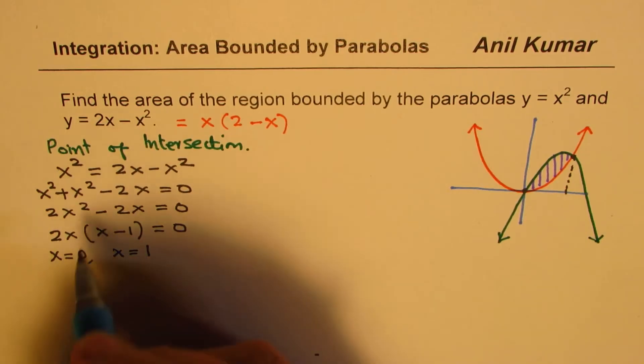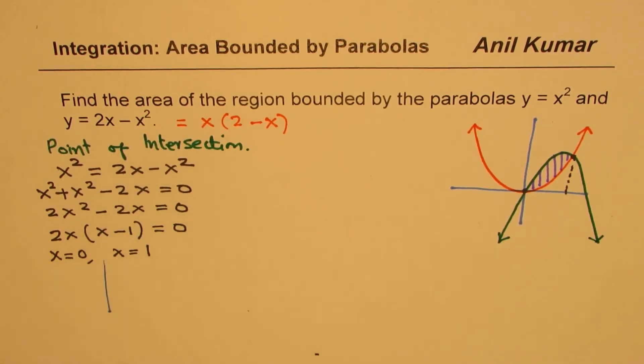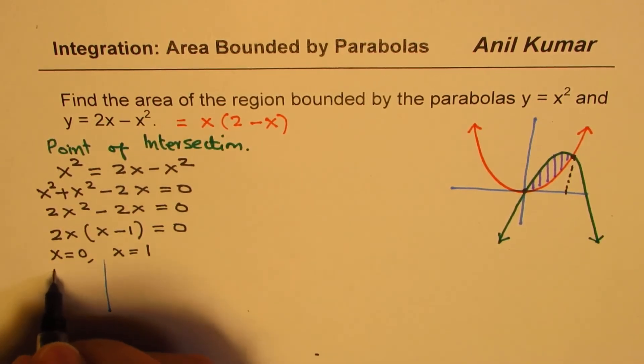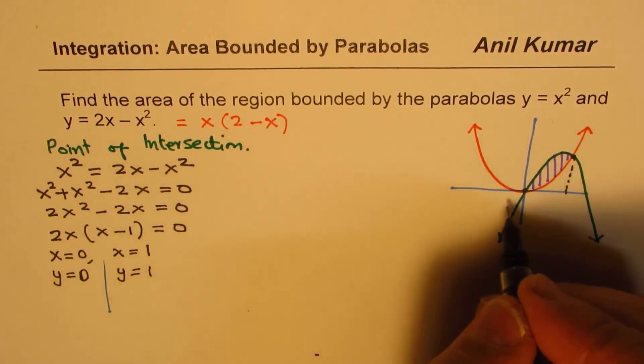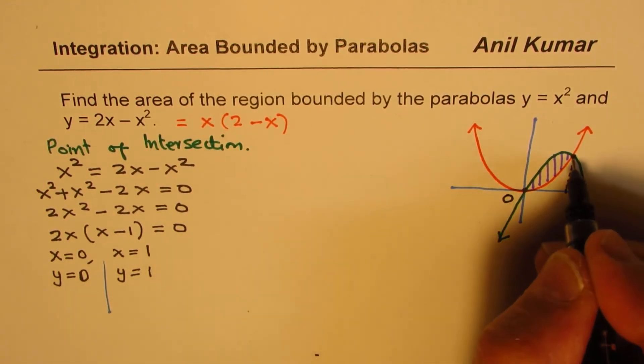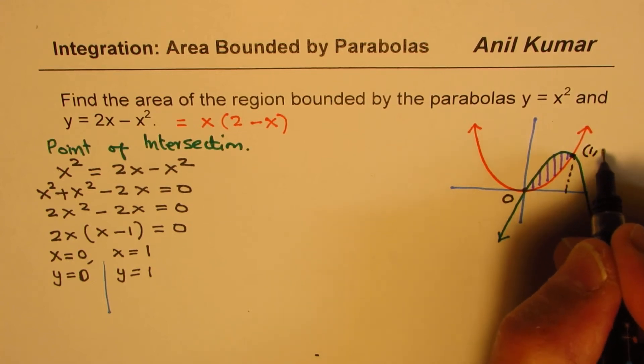At x equals 0, the y value is going to be 0. And for x equals 1, y is 0. For x equals 1, y will be 1. So these two points are 1 at origin, the other one here is at 1, 1.